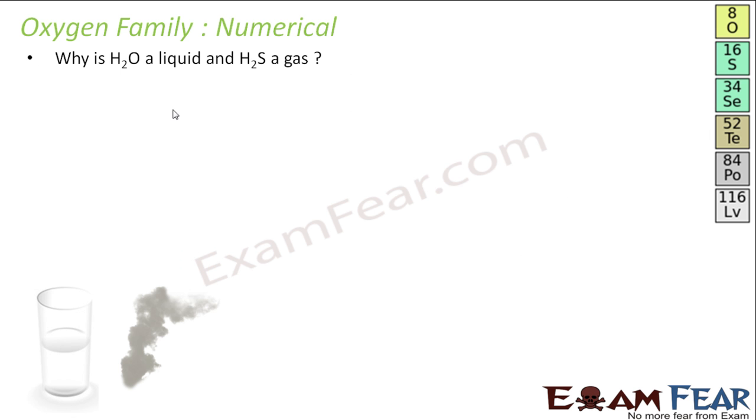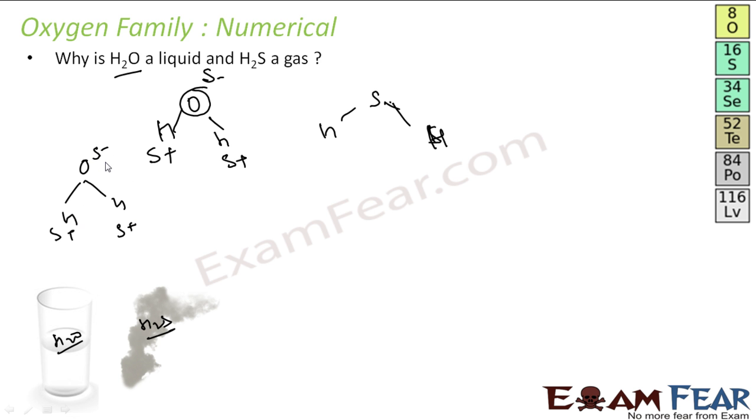Let's take one simple question. Water is liquid, hydrogen sulfide is gas. Why? Very easy reason actually, if you draw the structure of water and draw the structure of hydrogen sulfide. Oxygen is very electronegative. Electron is attracted towards oxygen. Oxygen gets negative charge. Hydrogen gets positive charge. Sulfur is not that much electronegative. It won't be able to attract electron towards itself. No hydrogen bond. In this case, there is a hydrogen bond. There is another oxygen, water molecule nearby. Slightly negative charge, slightly positive and slightly positive. So these positive and negative charges will form a hydrogen bond. So because of hydrogen bond, water is liquid.